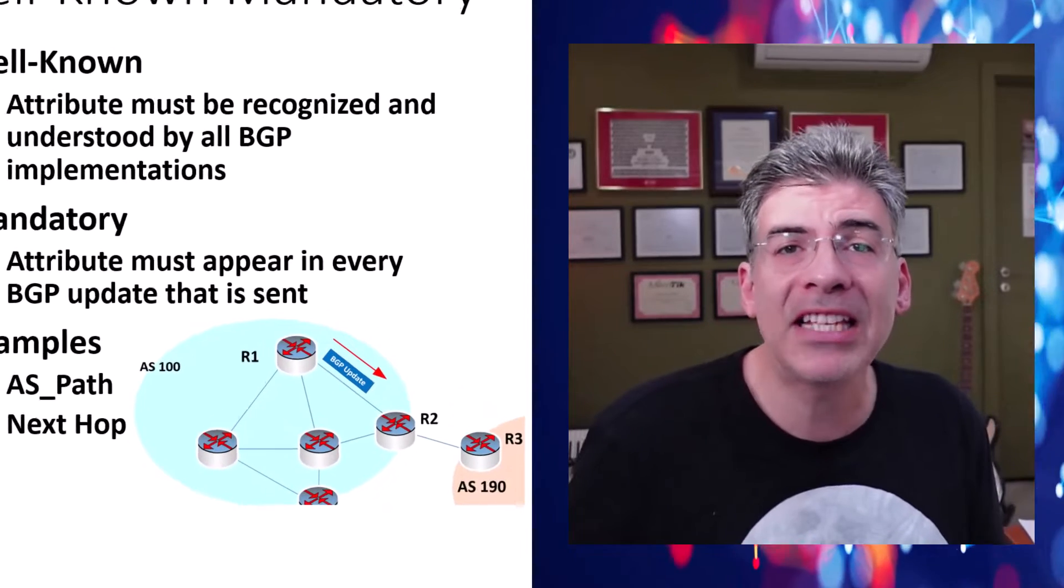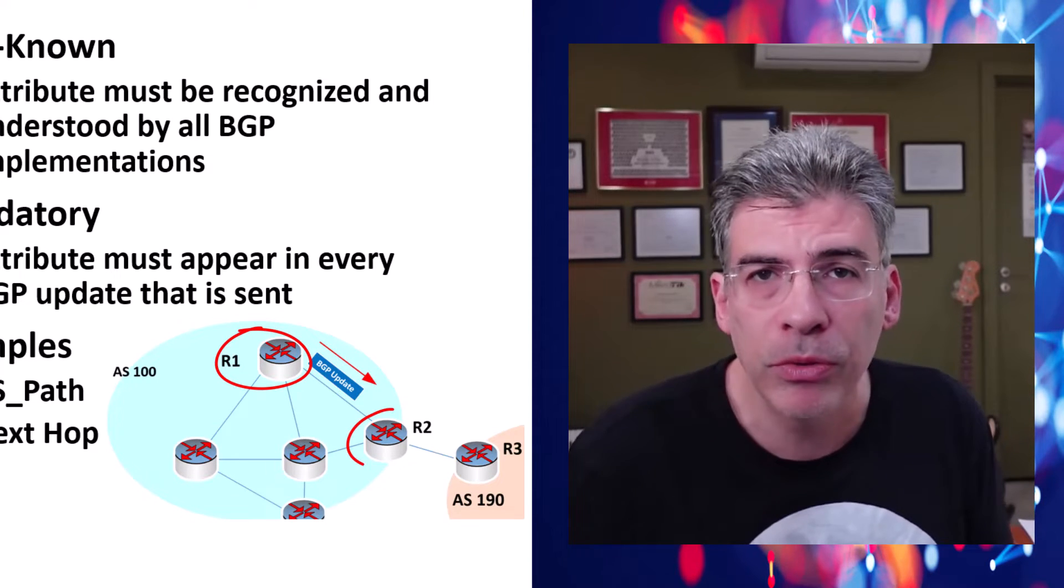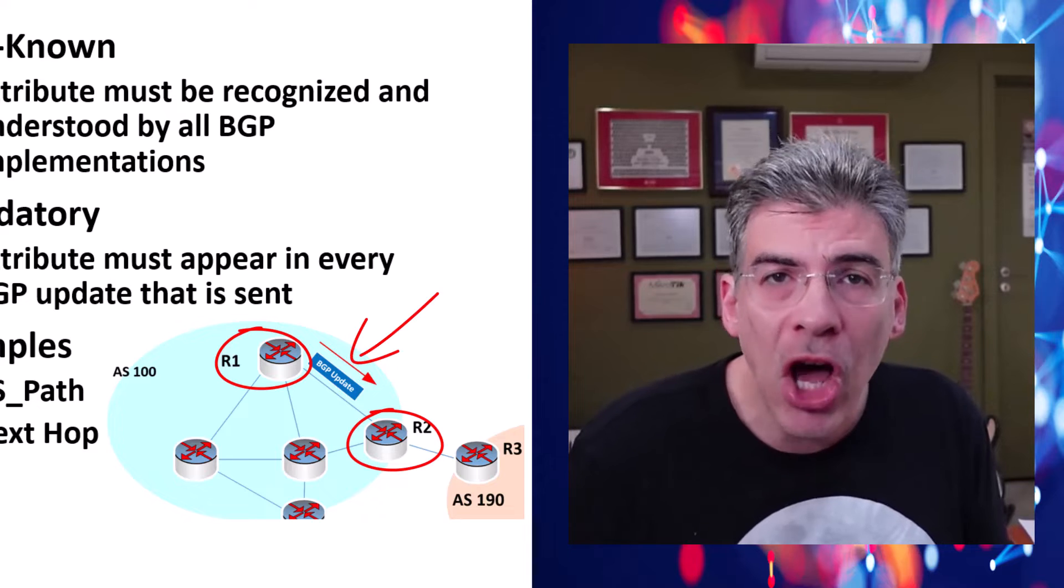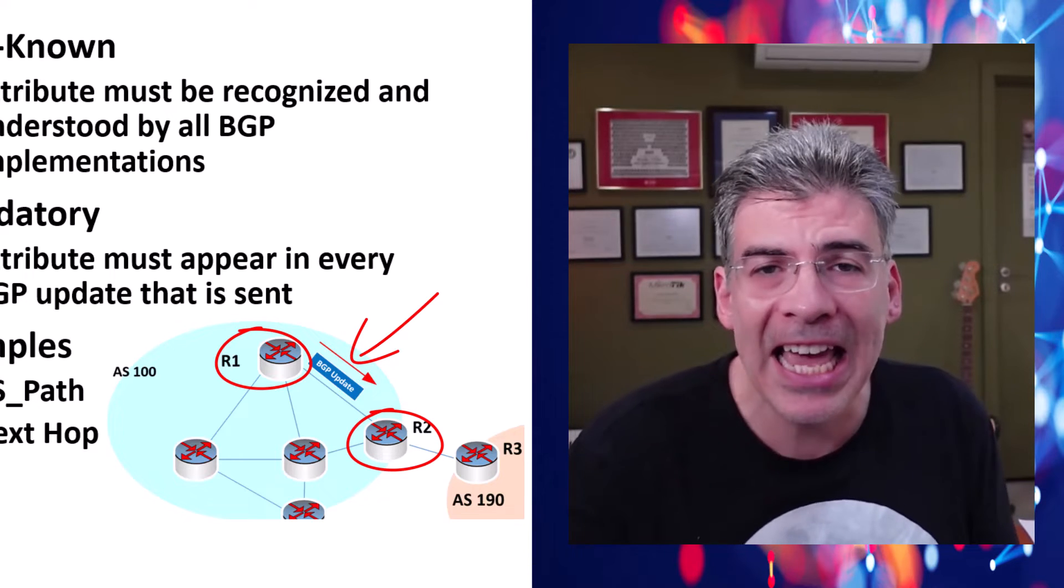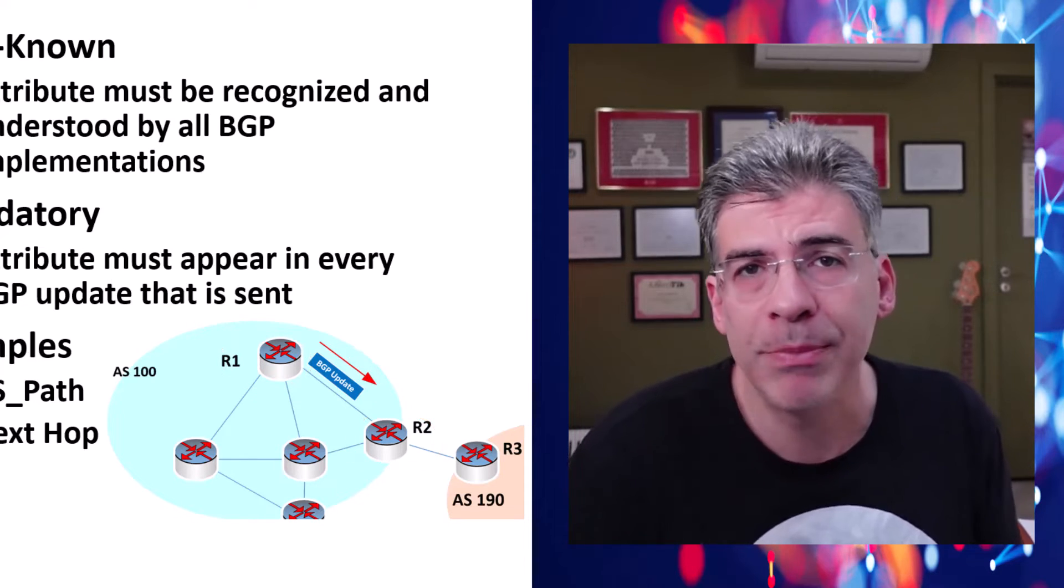If we take a look at this topology here, if we have R1 sending a BGP update to R2 and that BGP update does not include any AS path or is missing the next hop IP, R2 will simply drop that BGP update.